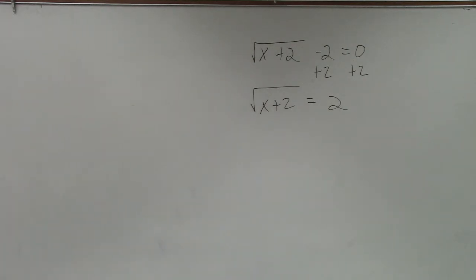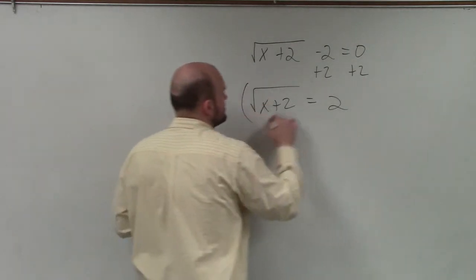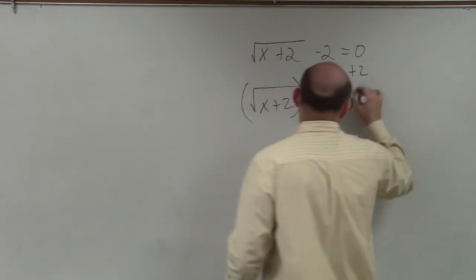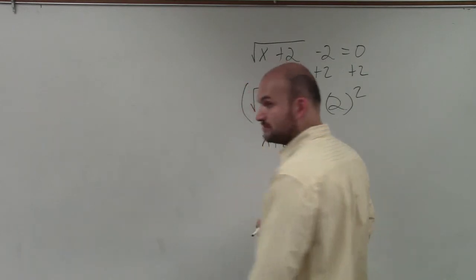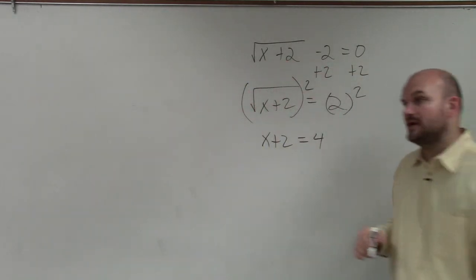Now, what I'm going to do is now I can undo square roots by squaring both sides. Therefore, I get x plus 2 equals 4. And now, go ahead and solve.